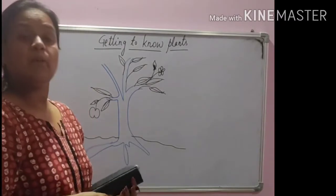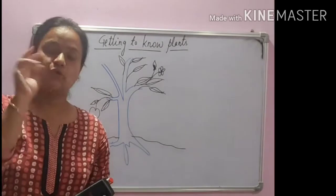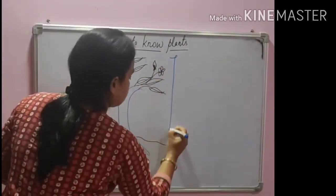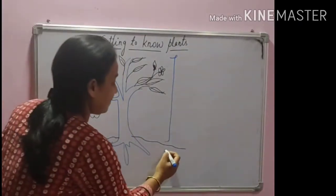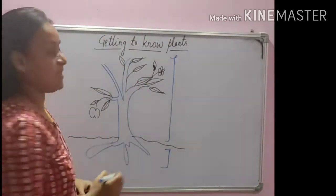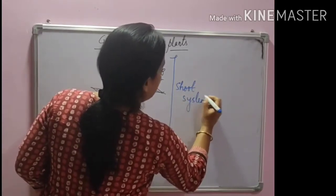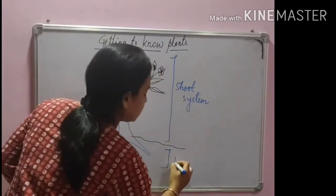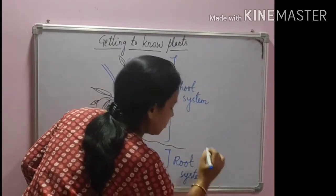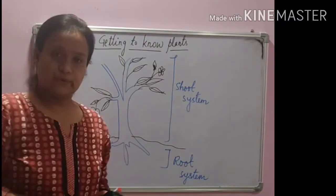Now, broadly we can divide this plant into two parts: the part that remains above the ground and the part which remains underground. We call the part above ground the shoot system, and the part which is underground is called the root system. Every plant, whether small or a big tree, has these two systems.